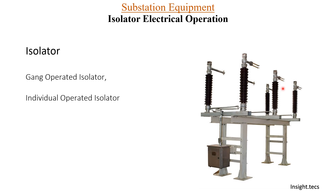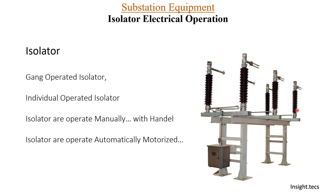Then we have individually operated isolators in which each phase is operated separately. Isolators are generally operated manually with a handle in the switch yard itself. Another way to operate the isolator is automatically — motorized isolators. Motorized isolators have a mechanism inside a box, and they can be further operated in two ways: local operation, which is electrical operation, or remote operation.